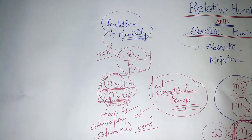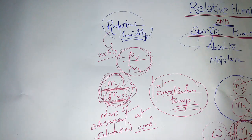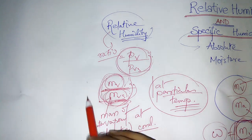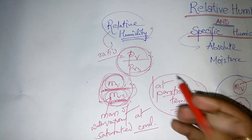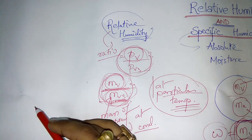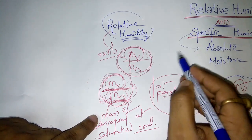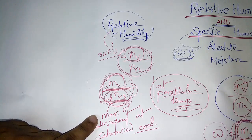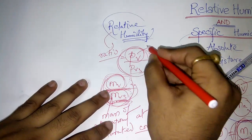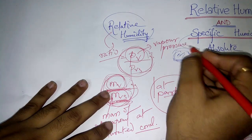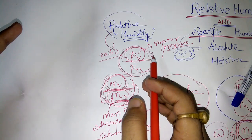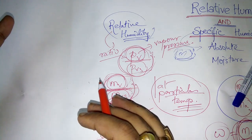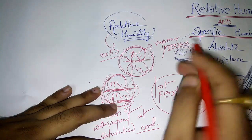Whatever the temperature — 30°C or 32°C — relative humidity is measured at that instant temperature. You can also define it as PV divided by PVS. If air has some moisture with some mass, then that moisture will exert some pressure — that is vapor pressure, PV. Relative humidity is then the current vapor pressure to the maximum vapor pressure that air can withstand at that particular temperature.